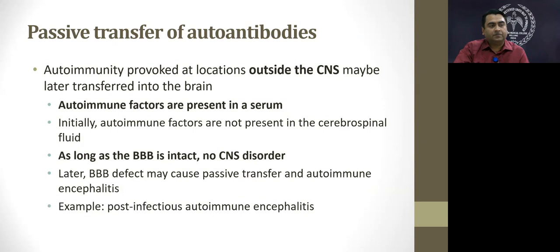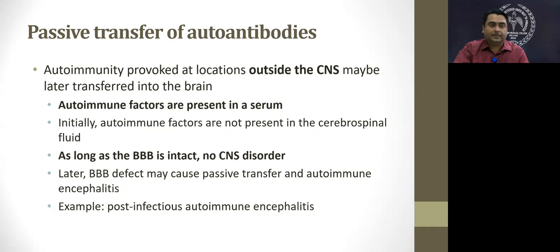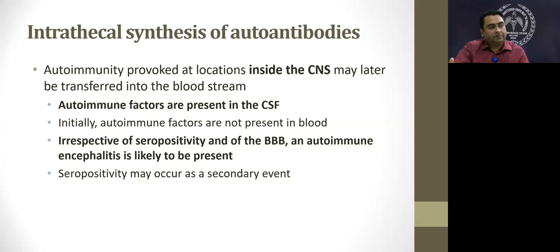Where exactly are these antibodies found — in serum or CSF? The autoimmunity provoked outside the CNS may be transferred into the brain once produced in serum through a breach of the blood-brain barrier — perhaps from a viral illness, meningitis, or viral encephalitis — allowing serum antibodies a route of entry into the CNS. On the other hand, if there is a primarily intrathecal synthesis of autoantibodies, the disease manifests in the brain initially and may spread outward. In this case, autoimmune encephalitis is likely regardless of serum positivity.